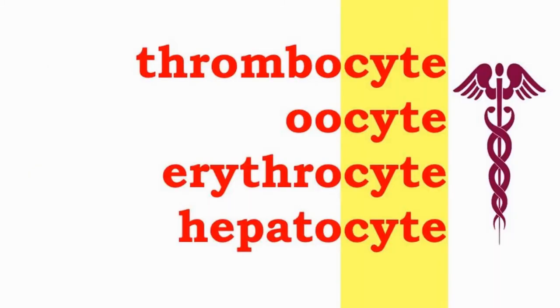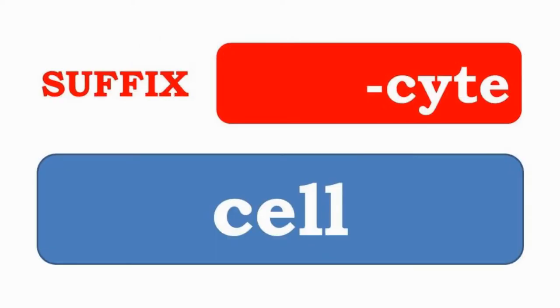Thrombocyte, Oocyte, Erythrocyte, and Hepatocyte have the suffix -CYTE, which indicates cell.